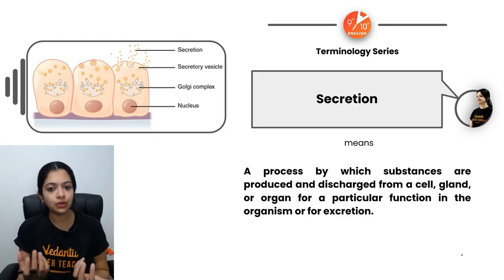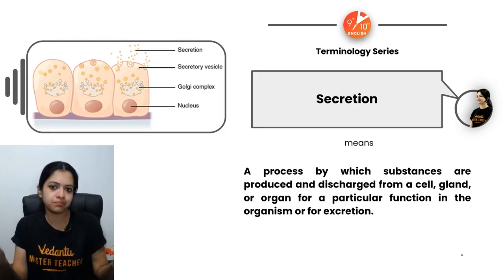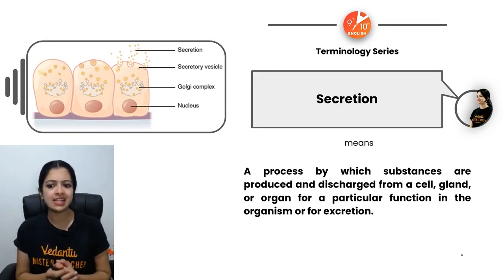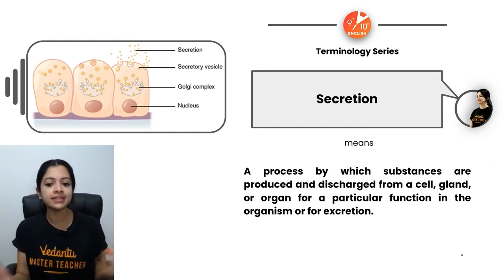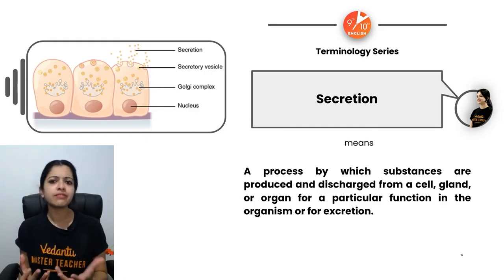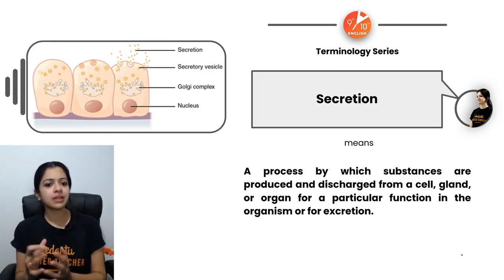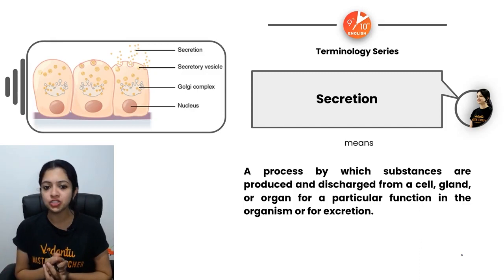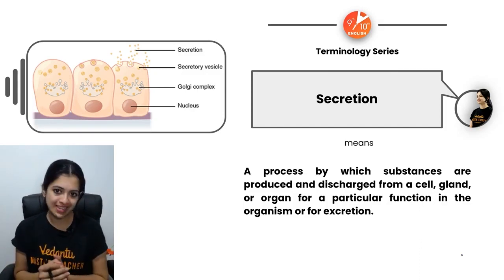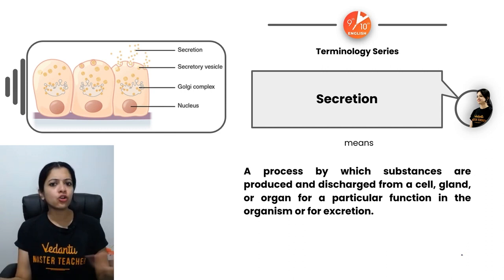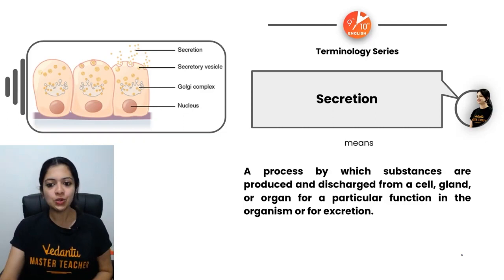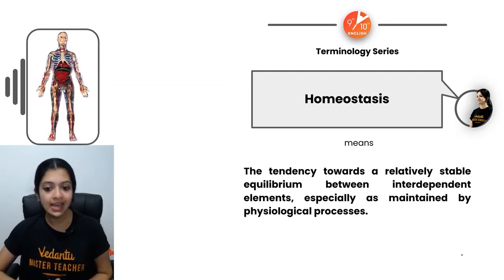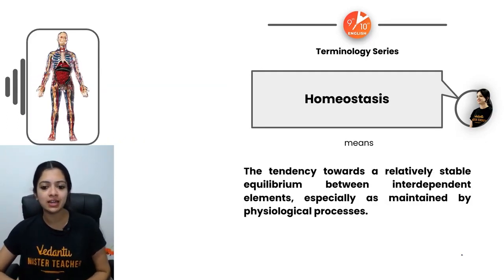Secretion is a process by which substances are produced and discharged from a cell or a group of cells — such as a gland or organ — usually for a particular function in the organism, or sometimes for the purpose of excretion. It involves the discharge of substances from cells or groups of cells into other parts of the body.